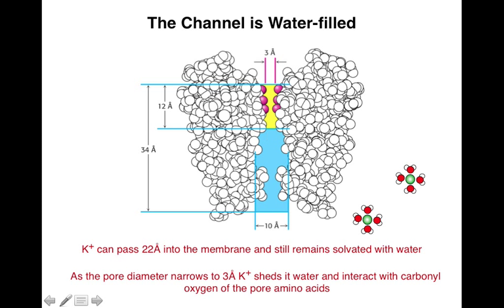However, here you can see that the channel narrows and this portion is called the selectivity filter. So before entering the selectivity filter, the potassium ion needs to lose its water shell.